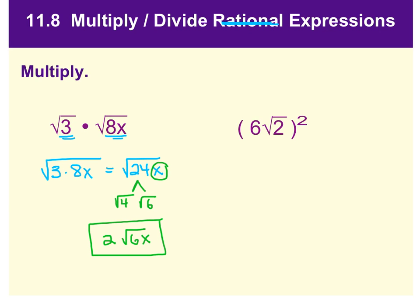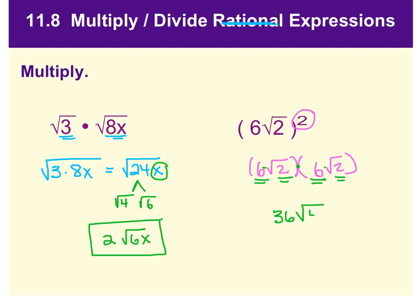This next one — if you're squaring something, remember that just means to multiply it twice. We're multiplying 6 times the square root of 2 times 6 times the square root of 2. Multiply the like parts: 6 times 6 is 36, and the square root of 2 times the square root of 2 is the square root of 4. The square root of 4 is equal to 2, so really we have 36 times 2, which is 72.